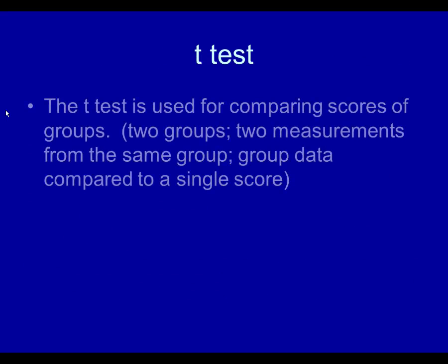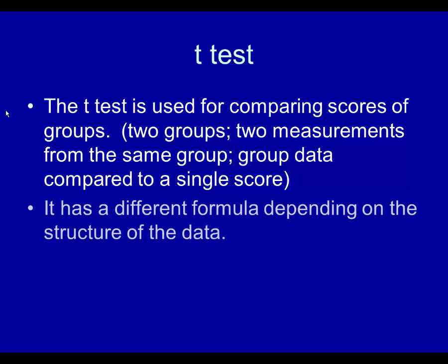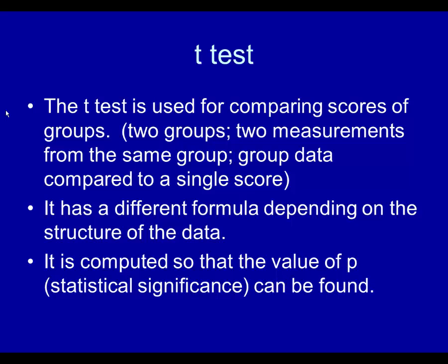The t-test is used for comparing scores of groups. You might have two groups being compared, you might have two measurements from the same group being compared, or you might have group data compared to a single score. It is a different formula depending on the structure of the data. It is computed so that the value of p, which represents statistical significance, can be found.